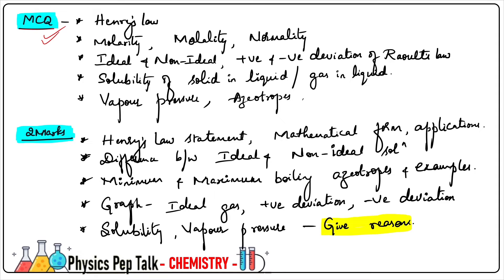For MCQ questions, concept-based and application-level questions will be asked. Hot and skill-based questions are also included, so MCQ can be tricky. Question paper setters add hot application-level and skill-based questions in MCQ. So concept-based MCQs are important — for example, Henry's Law concept-based questions.